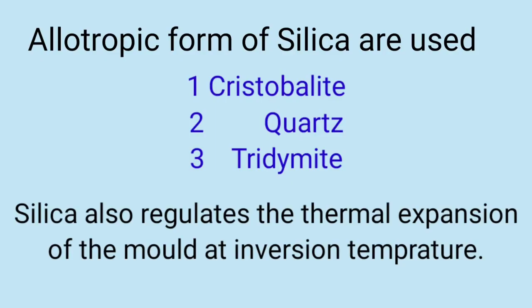The allotropic forms of silica used are: 1. Cristobalite, 2. Quartz, and 3. Tridymite. Silica also regulates the thermal expansion of the mold at inversion temperature.